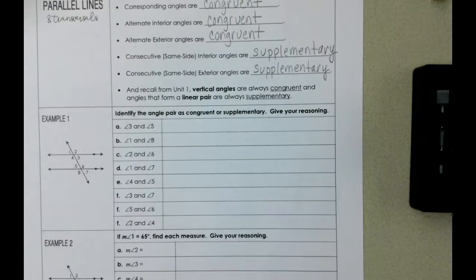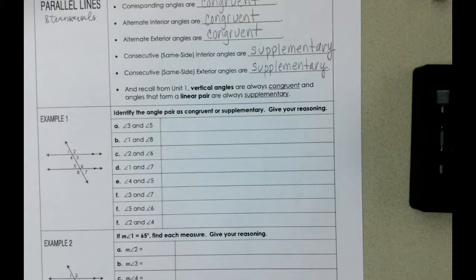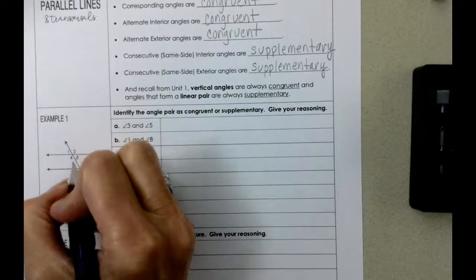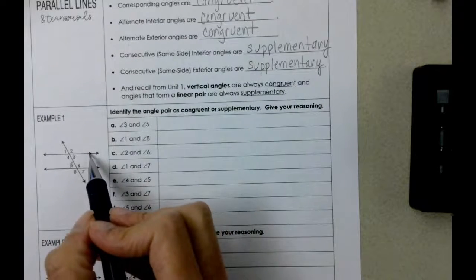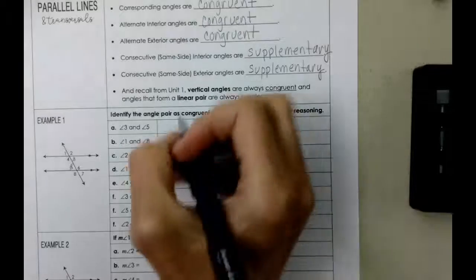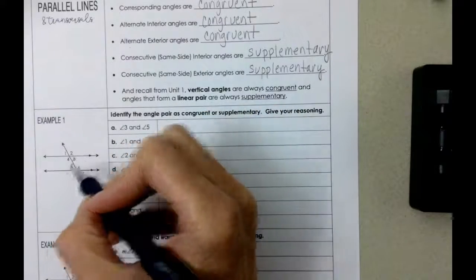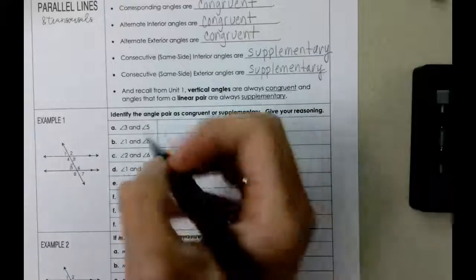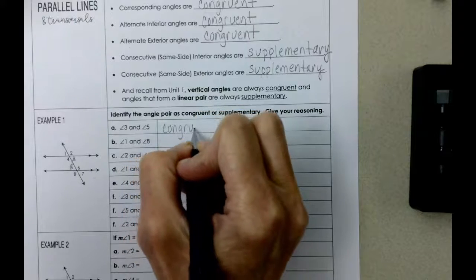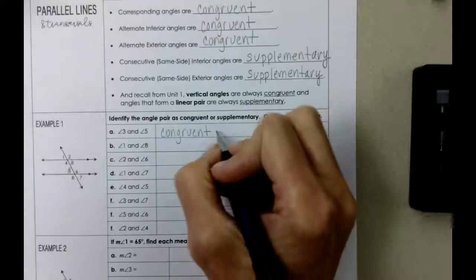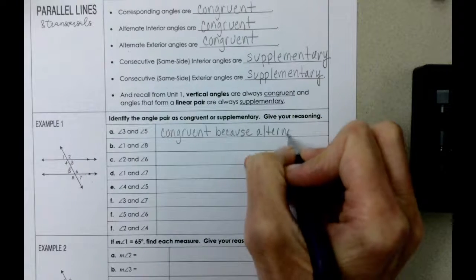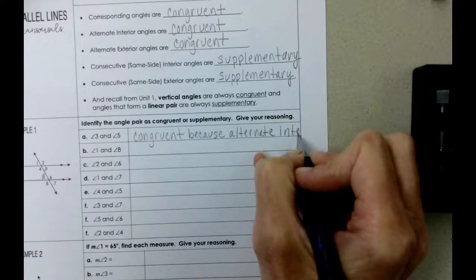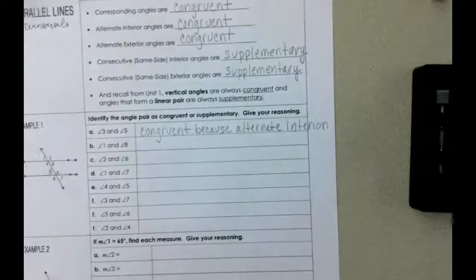So if we take a look at our first example here — identify the angle pair as congruent or supplementary, and give our reasoning. Starting with angle 3 and angle 5: notice that they are in between the two parallel lines, indicated by the feathers. These are alternate interior angles, and alternate interior angles are congruent.